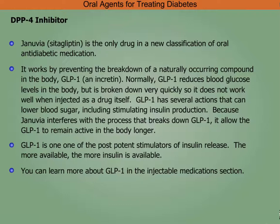DPP-4 inhibitor: Januvia is the only drug in a new classification of oral anti-diabetic medication. It works by preventing the breakdown of a naturally occurring compound — GLP-1. Normally GLP-1 reduces blood glucose levels but is broken down very quickly. GLP-1 has several actions that lower blood sugar, including stimulating insulin production. Because Januvia interferes with the process that breaks down GLP-1, it allows GLP-1 to remain active in the body longer. GLP-1 is one of the most potent stimulators of insulin release.